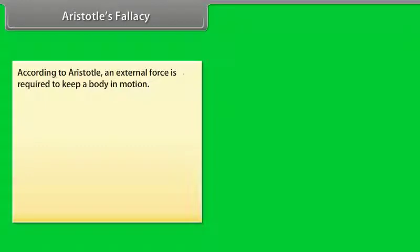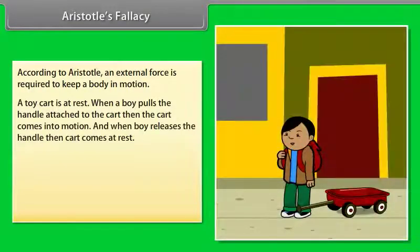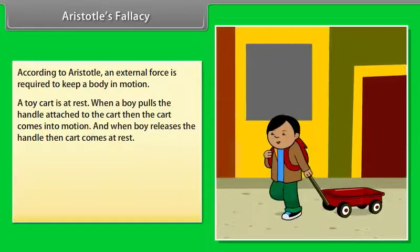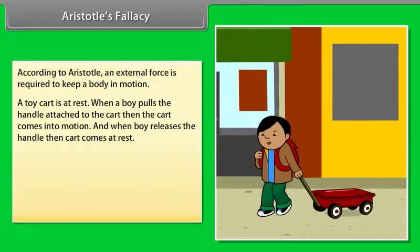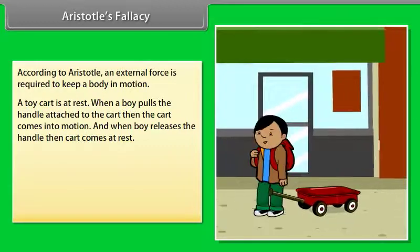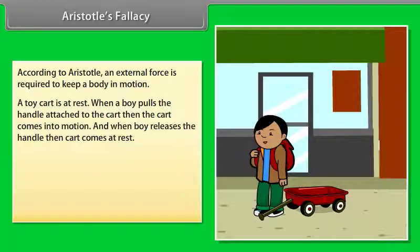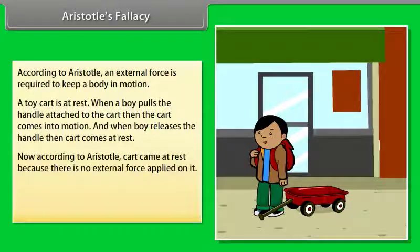According to Aristotle, the Greek thinker, an external force is required to keep a body in motion. For example, a toy cart is at rest. When a boy pulls the handle attached to the cart, the cart comes into motion. And when the boy releases the handle, the cart comes to rest. According to Aristotle, the cart came to rest because there is no external force applied on it.